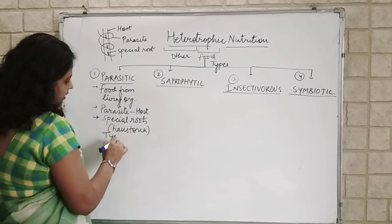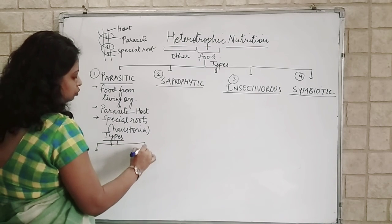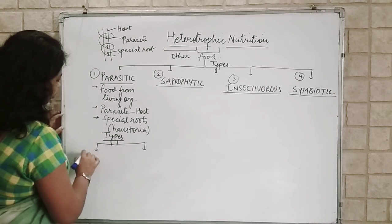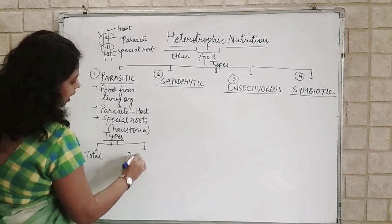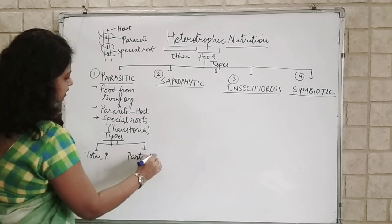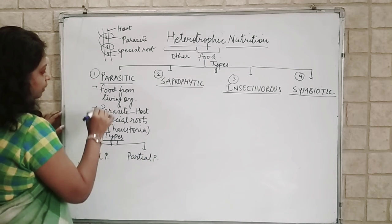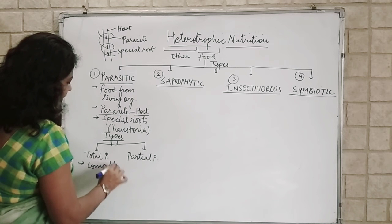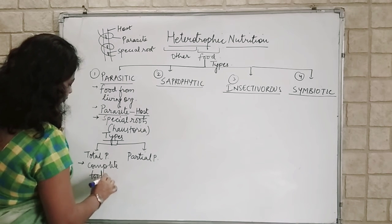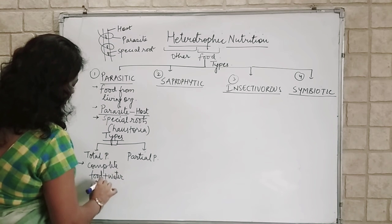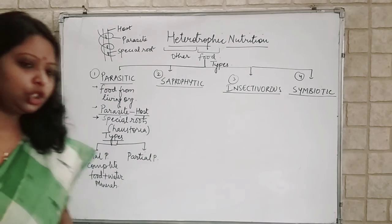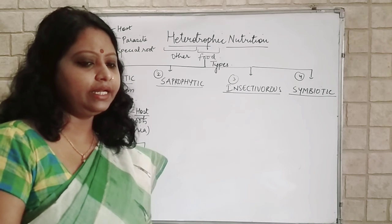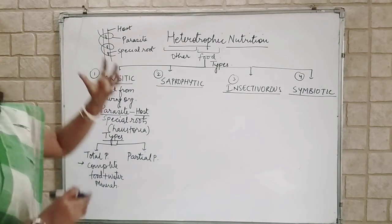Now, types of parasites. Based on whether they take all the nutrition or only some amount from the other plant, parasites are divided into Total Parasites and Partial Parasites. Total Parasites are completely dependent on the host for everything — food, water, minerals, everything.